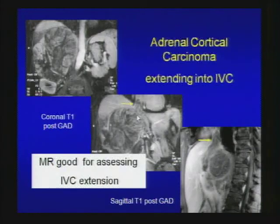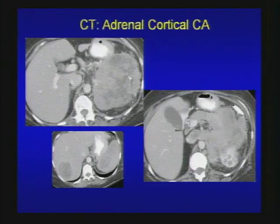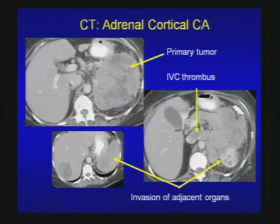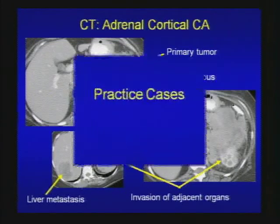MR is very good for assessing IVC extension. Another CT case of adrenal cortical carcinoma: large heterogeneous mass — did you notice the IVC thrombus? And invasion to adjacent organs — the left kidney and the spleen — and distant metastasis to the liver. Aggressive tumor.